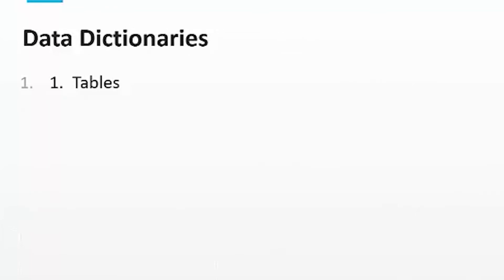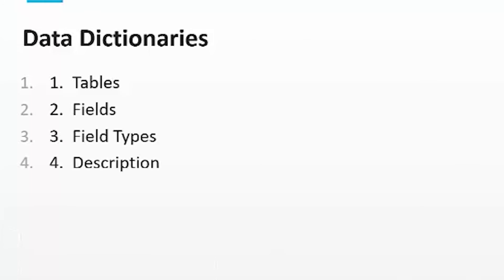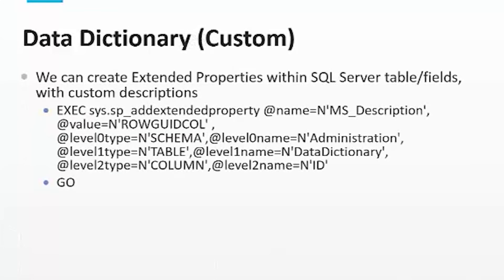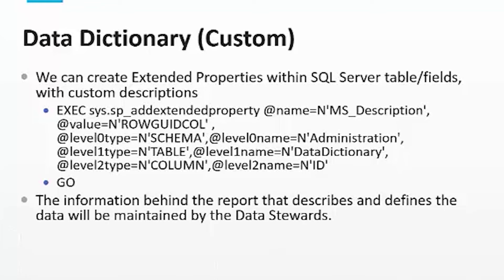Another key component is data dictionaries. We like to store the tables, fields, field types, and descriptions. A lot of times we create what are called extended properties — you execute a command and it stores the information. It's not easily viewable unless you know where to look, but you can surface it in a table and put a Power BI report on top of it, making it available on the Power BI portal so that self-service users can search. That's a custom solution we've implemented in the past.